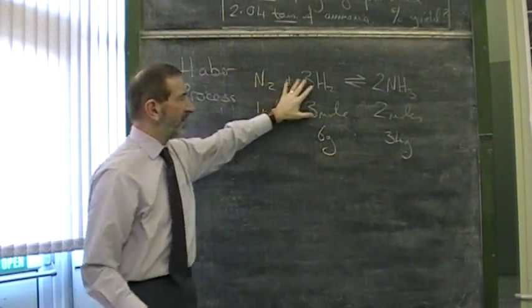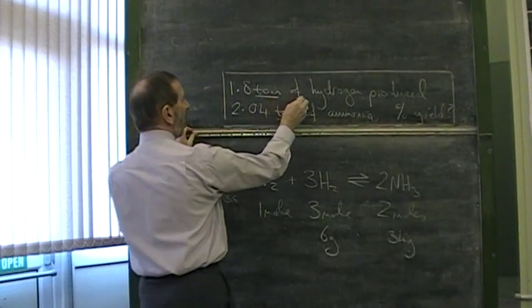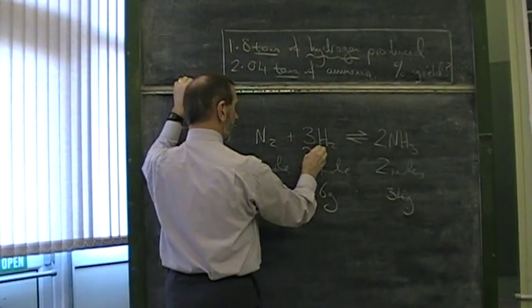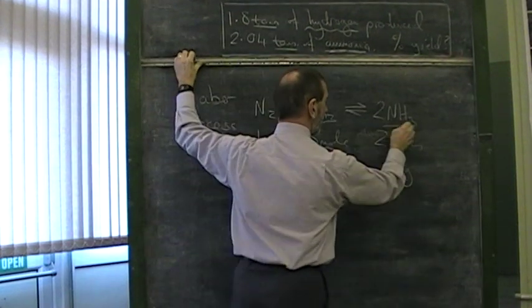Once again, we're given the equation. Once again, we pick out the chemicals which matter. We've got the hydrogen, there's the hydrogen there. And we've got the ammonia, there's the ammonia there.